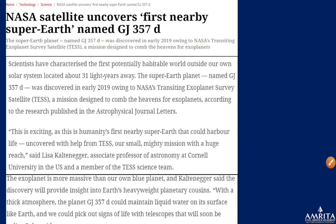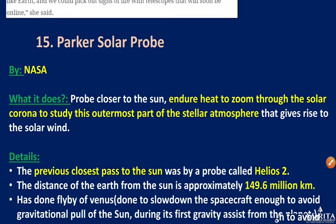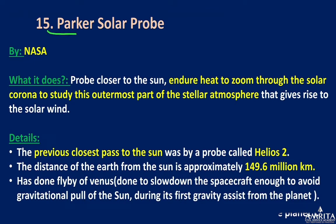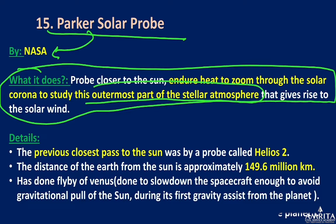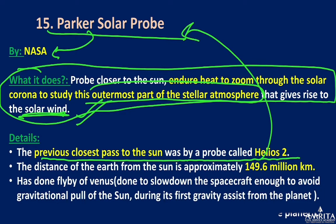Parker Solar Probe by NASA is designed to go closer to the Sun, endure extreme heat, and zoom into the solar corona — the outermost part of the Sun's stellar atmosphere — to study the solar wind. The previous closest pass to the Sun was done by a probe called Helios 2.